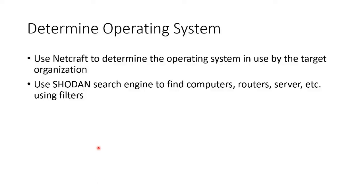We can determine operating systems of websites. There's a site called Netcraft — they'll tell you the operating system used by the target organization. If you want, you can use something called Shodan, which is loads of fun. They basically show every internet-facing device, whether it is a computer, router, server, webcam, industrial control system, or Internet of Things device.